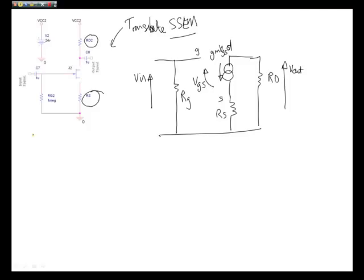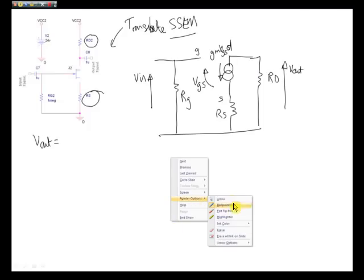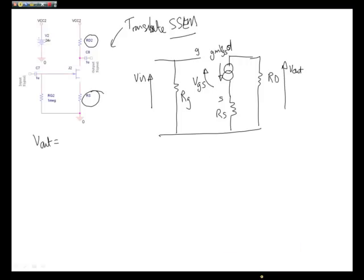So let's start with the simple term V out. V out equals, let's just have a look around here. I'll just change colour and I'll put on some Kirchhoff voltage loop so you can see what's actually happening inside our circuit.